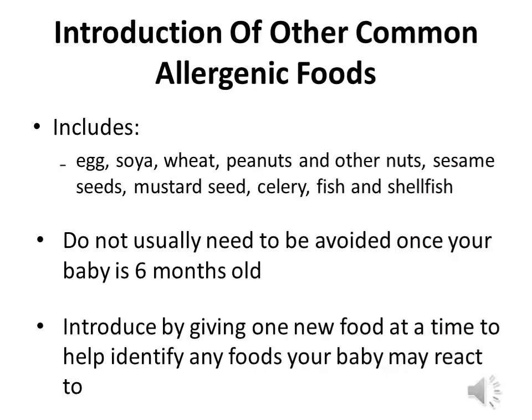A lot of parents ask about introducing other allergenic foods. We believe that introducing foods like eggs, wheat, soya and even peanuts early — around six months — reduces the risk of developing an allergy. For peanuts, use peanut butter rather than whole nuts due to the choking risk. Start with a tiny amount — about the size of a grain of rice — placed on the lips. Wait around 20 minutes and repeat, as reactions can sometimes occur on the second exposure. If they're fine, gradually increase the amount.